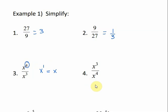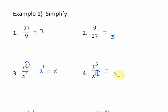But in number 4, my largest exponent is on the bottom. It's the same two numbers, 4 and 3. So if I subtract 3 from 4, I get 1, but this time it's got to go in the denominator. To show that it's in the denominator, I put a 1 over it.